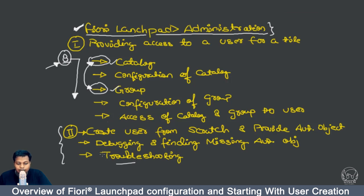We will focus on two parts in this section. The first part is how to create a user who already has some basic authorization, so we don't have to struggle much. We will go through some of the authorization part, but not in depth. This user will be created and we will try to give him access to a purchase approval application tile, which we saw in the previous section.